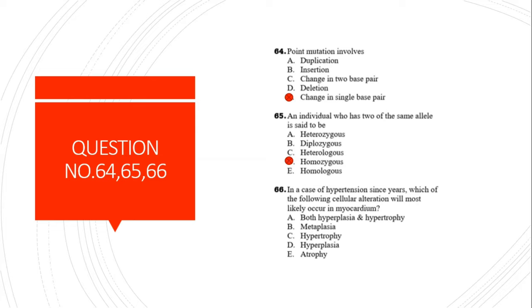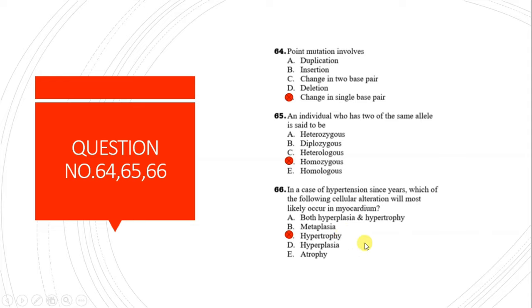Question 66: In hypertension, which cellular alteration will most likely occur in the myocardium? The answer is hypertrophy only, not hyperplasia and hypertrophy. Myocytes of the myocardium or heart cannot divide; they only hypertrophy - they increase in size and diameter when the workload on the heart is increased.